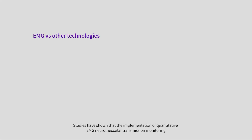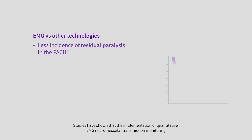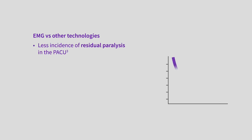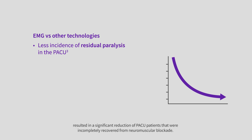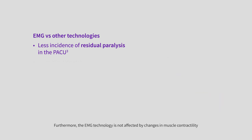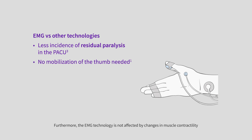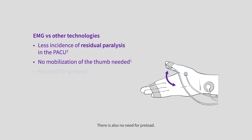Studies have shown that the implementation of quantitative EMG neuromuscular transmission monitoring resulted in a significant reduction of PACU patients that were incompletely recovered from neuromuscular block. Furthermore, the EMG technology is not affected by changes in muscle contractility, and therefore there is no need to immobilize the muscle to be studied. There is also no need for preload.